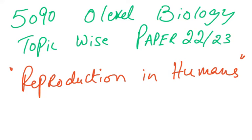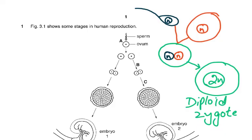We will start another chapter on reproduction in humans, with topic-wise questions. Starting with question number one: figure 3.1 shows some stages in human reproduction — a sperm, an ovum, and then process A. That process is fertilization.